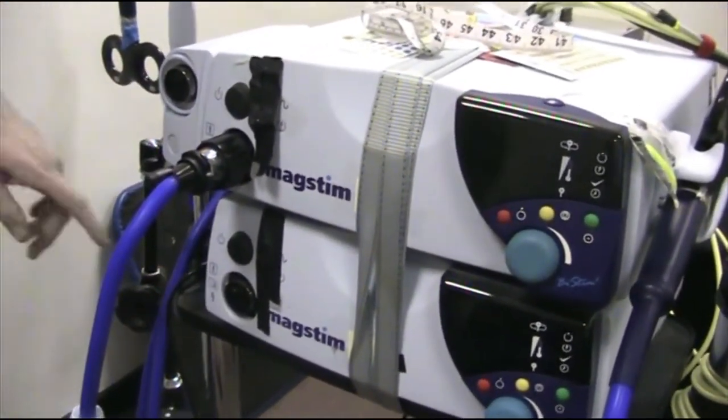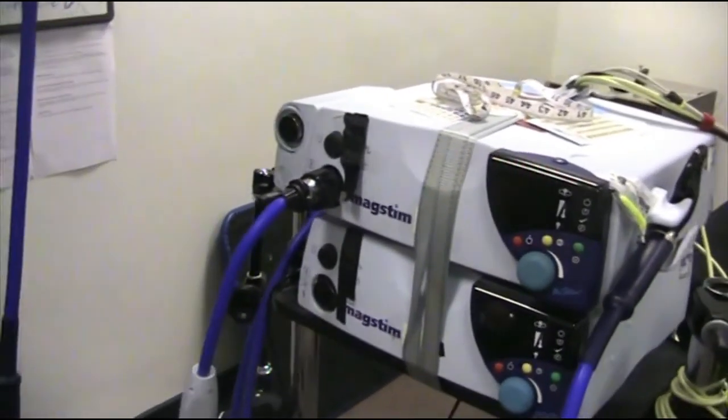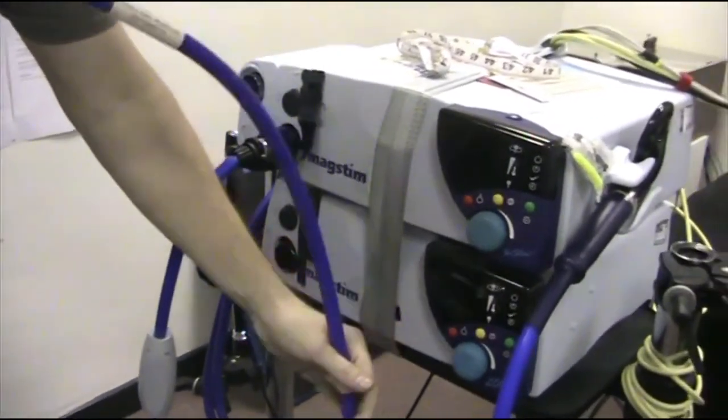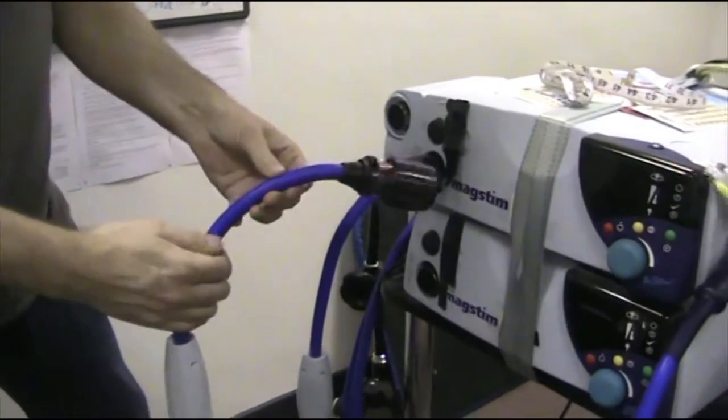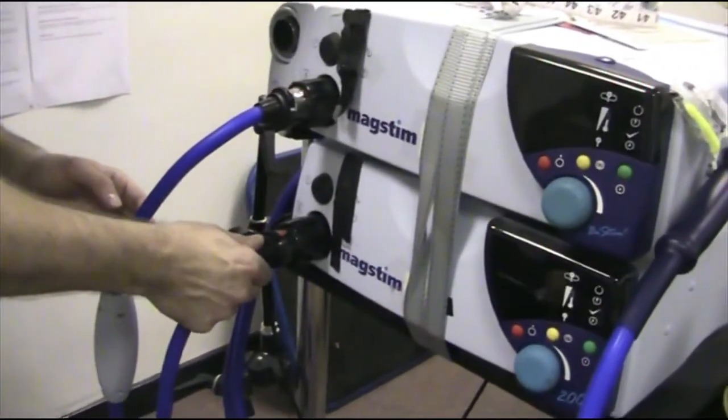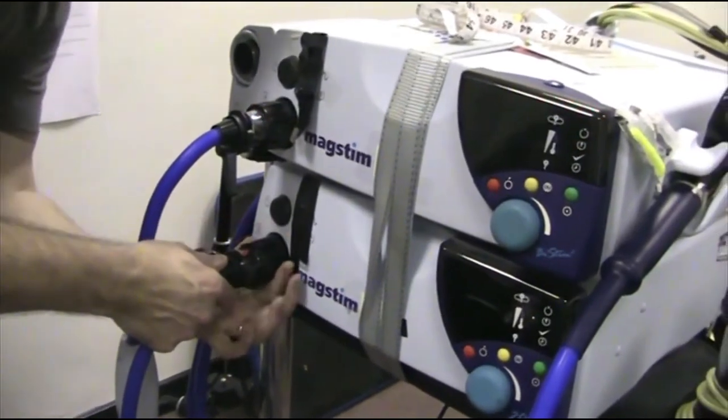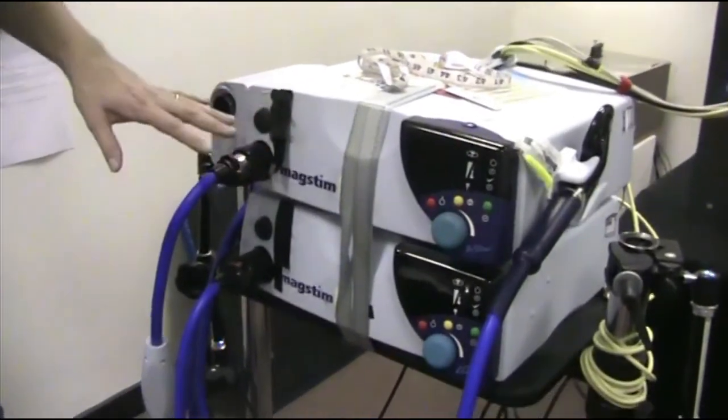And then the second coil you can plug into the bottom. Same thing, red triangle at the top. Rotate, and then rotate again. And now you have two machines working independently.